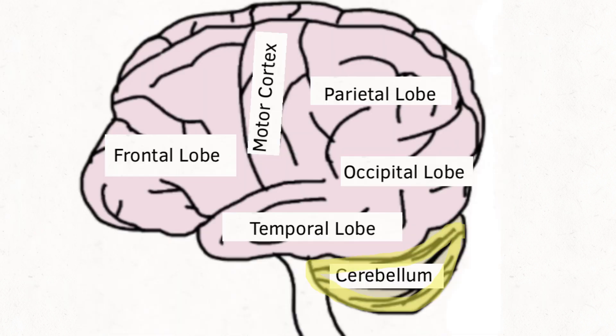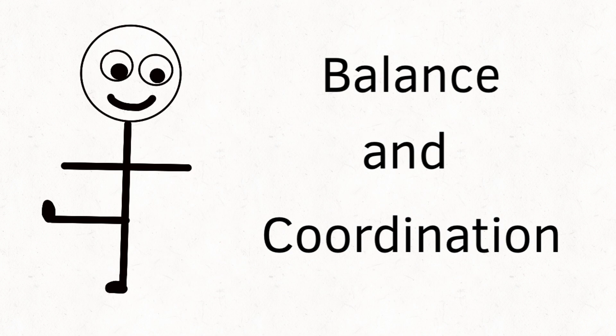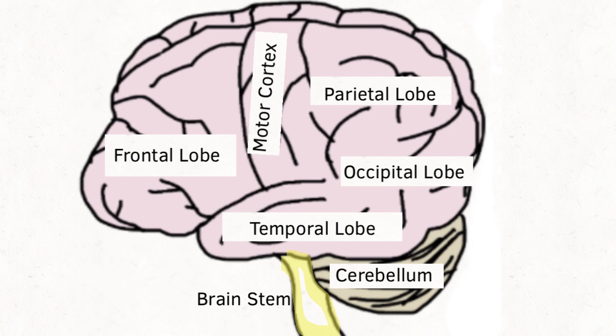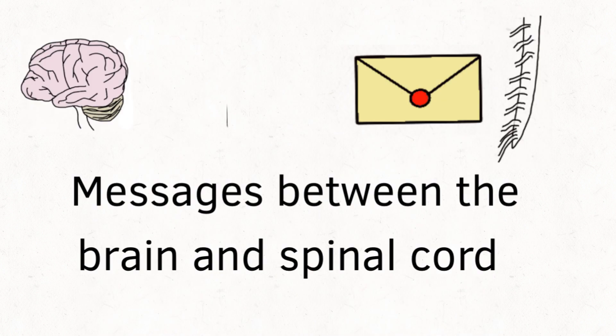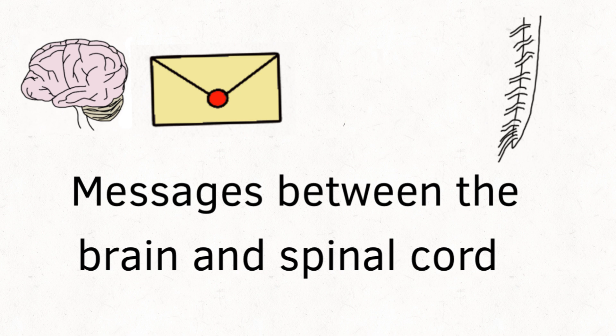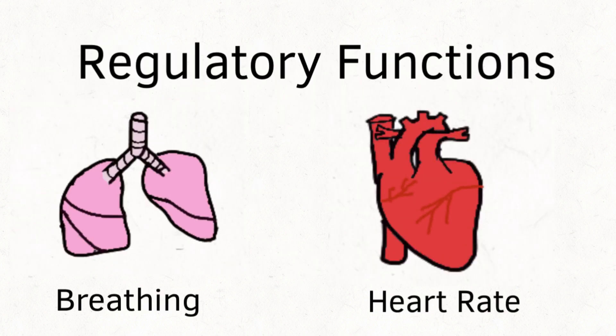The cerebellum helps you balance and coordinate your movements. The brainstem allows for messages to pass between the brain and the spinal cord. It also is involved with regulatory functions such as breathing and your heart rate.